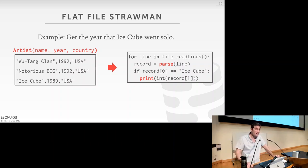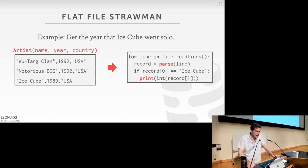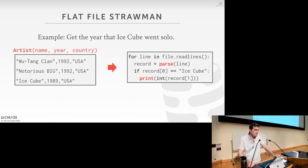Another problem: you can't guarantee that there's only one entry for Ice Cube. There's no way to ensure, using this method, that someone doesn't come in and put in another record for Ice Cube. There's no way to maintain the invariant that only one record represents Ice Cube.